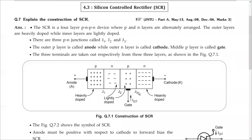Because J3 is also forward biased, the negative signal will reach the P side. Now with respect to J2, the positive signal is reaching the N side and the negative signal is reaching the P side. So J2 is reverse biased. Result: J1 and J3 are forward biased, J2 is reverse biased — when the gate terminal is unconnected, or you can say gate current is zero.